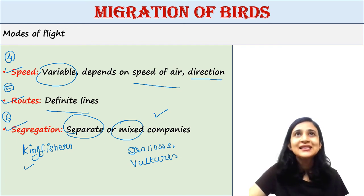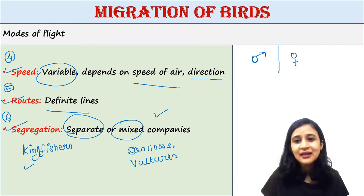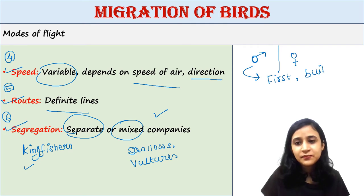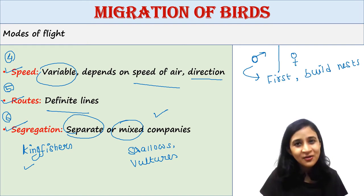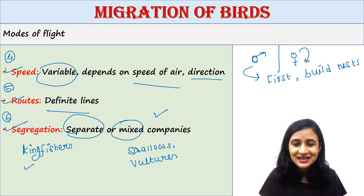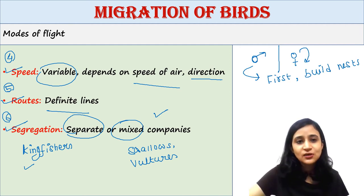In some species, the male and female individuals travel separately. Males arrive first and build nests, and later the young birds accompany their mothers. So females and their young birds come later. This also happens in some species.